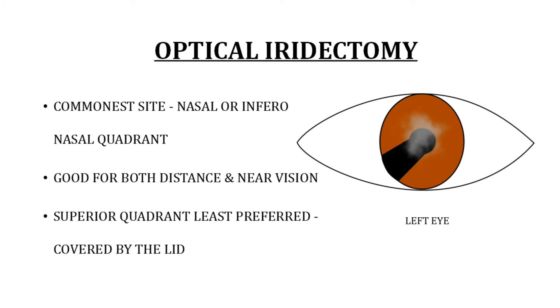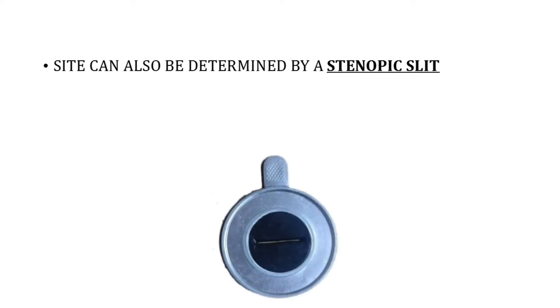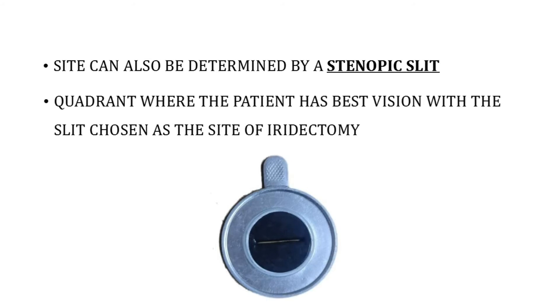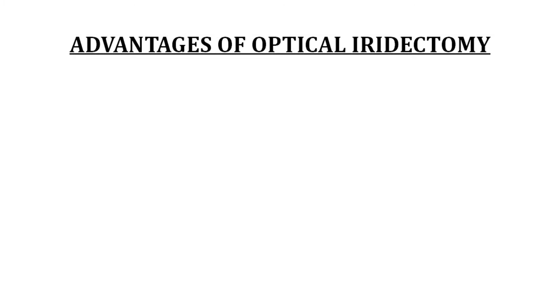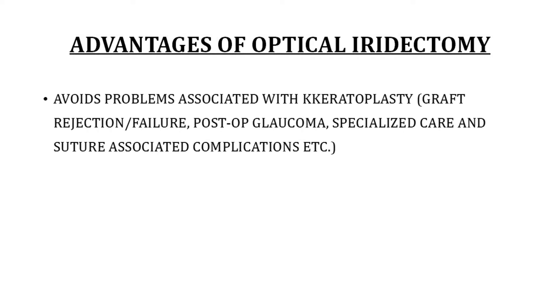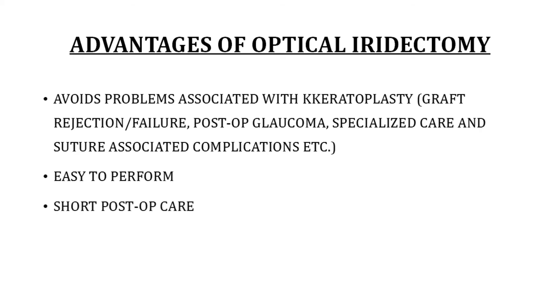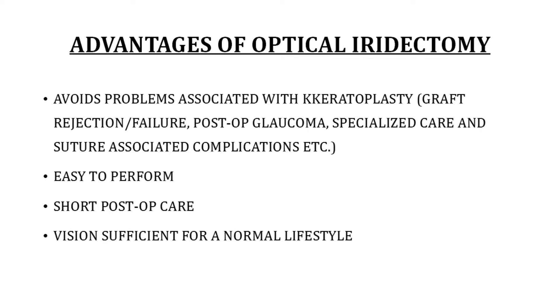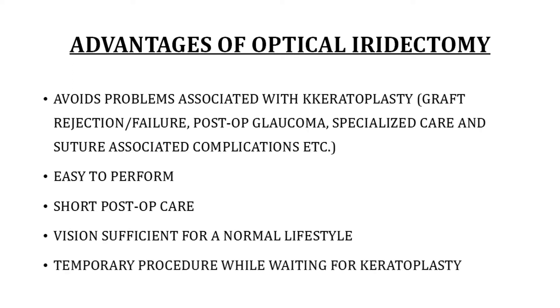However, in cases where clear peripheral cornea is not available in any other quadrant, superior optical iridectomy can be done. If the patient is cooperative, the site can be determined using a stenopic slit — during pre-operative assessment, the patient's pupil is dilated and the quadrant giving best vision is chosen as the site of iridectomy. Advantages over keratoplasty include: no graft rejection, no graft failure, no post-op glaucoma, no need for specialized care, and no suture-associated complications. It is easy to perform, requires short post-op care, and provides vision sufficient for a normal lifestyle including schooling. It can also serve as a temporary measure while waiting for a suitable donor cornea for keratoplasty.